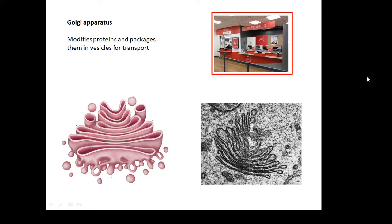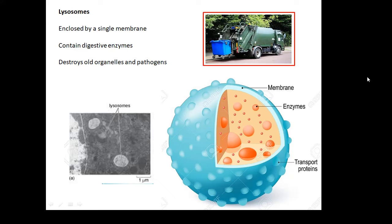Lysosomes. These are the rubbish collectors. Enclosed by a single membrane, they contain digestive enzymes. They destroy old organelles and pathogens. Pathogens are things which can cause disease. So they collect rubbish, and then the enzymes inside them break it down.